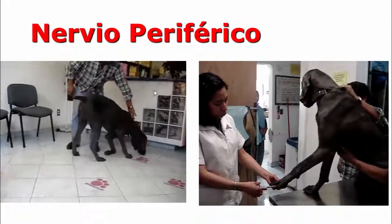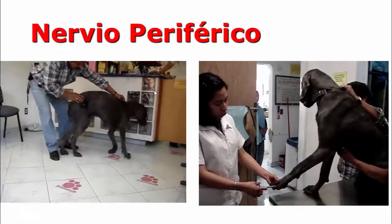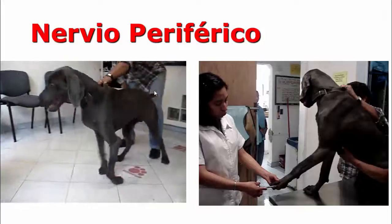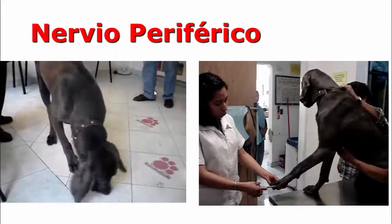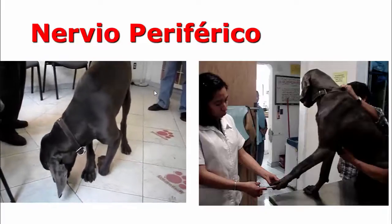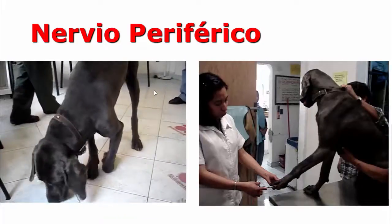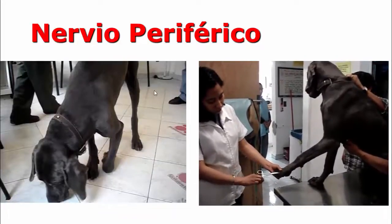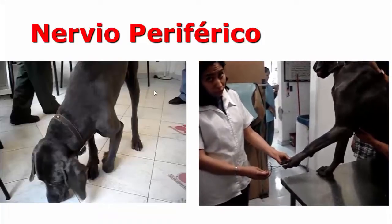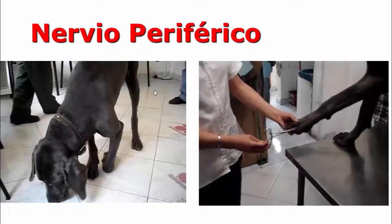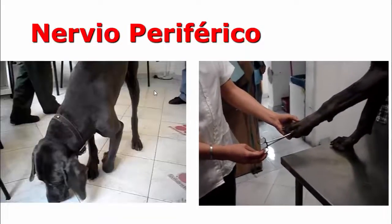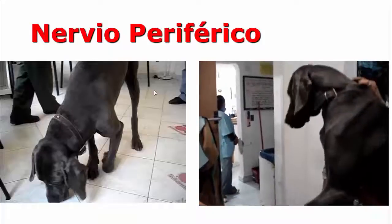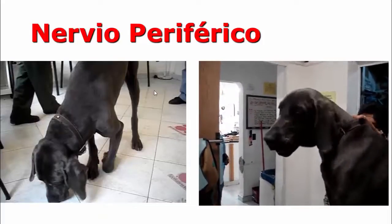El quinto sitio sería el nervio periférico. Sabemos que se dan monoparesias inmediatas con una atrofia rapidísima de los músculos —como vemos en la imagen con la escápula y su espina muy prominente—. La disminución o ausencia del dolor profundo es muy clara, no hay flexión del miembro; todo es un signo de neurona motora baja: monoparético o monoplégico, con rápida atrofia muscular.